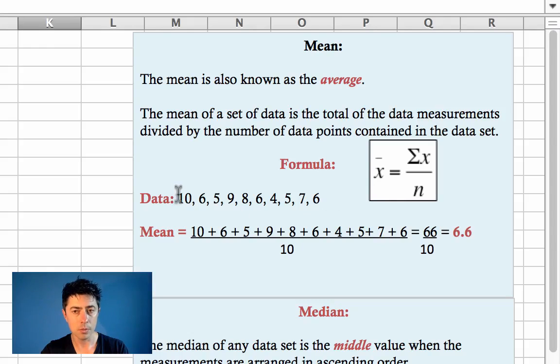Now in this data set, we have 10 values, so that's represented by n. And we add up those values, that's what the sum of x represents. So adding up these 10 values, like here, divided by the number of values will give us an average of 6.6.